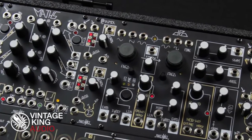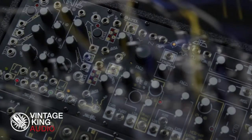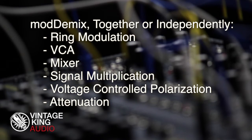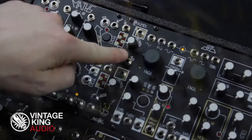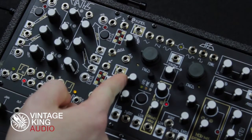In the Make Noise Shared System, there's no shortage of sound processing, both analog and digital. To kick off our analog sound processors, let's jump to the modulator ModdeMix. The ModdeMix features two identical direct coupled balanced modulator circuits that can be used together or independently for ring modulation, VCA, a mixer, signal multiplication, voltage controlled polarization, attenuation, and more. The unique balanced modulator circuit turns off around zero volts at the carrier input, making the circuit behave very well as a VCA.